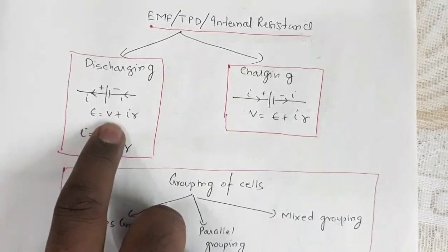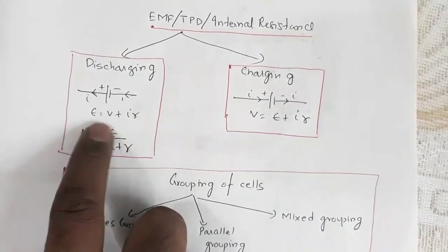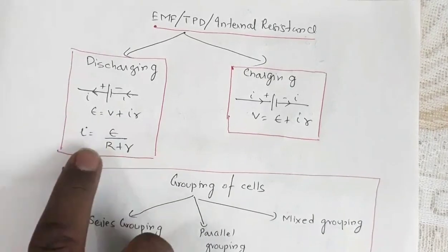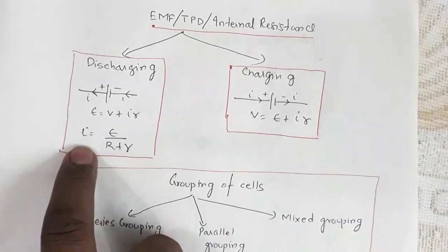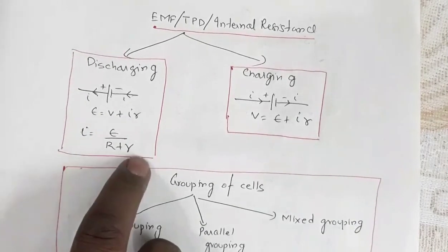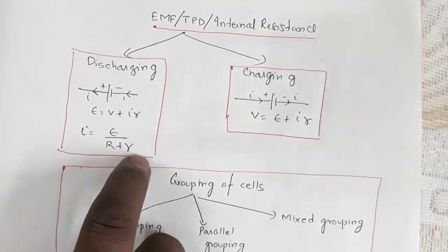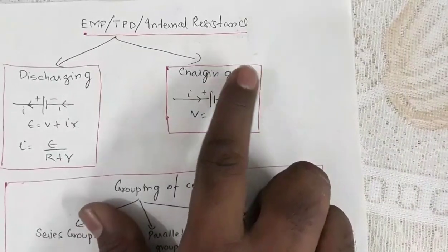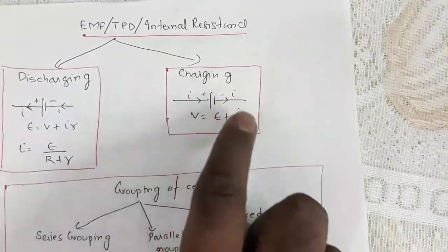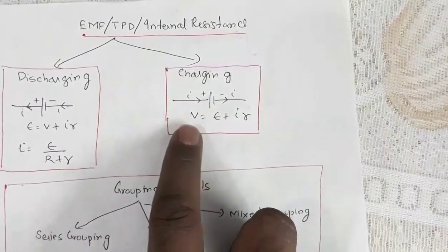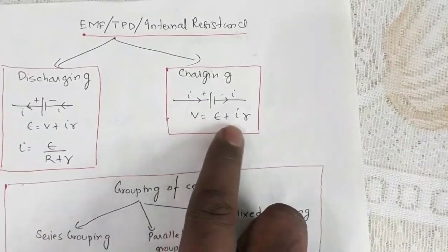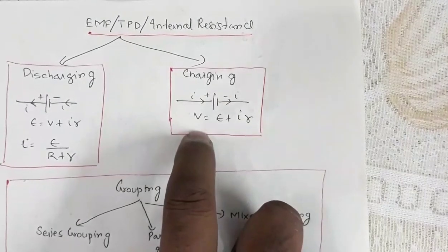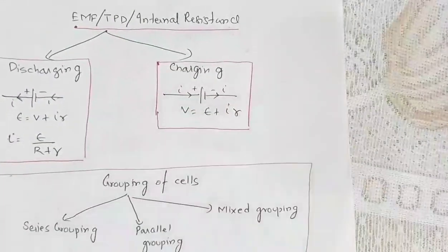E is the EMF and V is the terminal potential difference. In discharging, EMF is greater than terminal potential difference, and I = E/(R + r), where R is external resistance and r is internal resistance. Charging is when current flows into the cell; in that case, V = E + Ir, so terminal potential difference is greater than EMF.